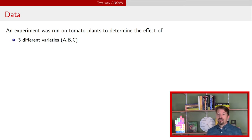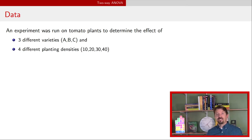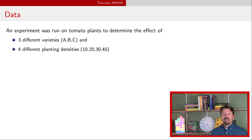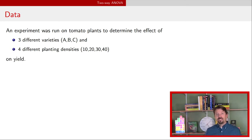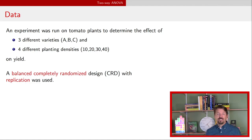So here's the idea. We have an experiment done on tomato plants. We have three different varieties — A, B, and C — and four different planting densities: 10, 20, 30, and 40. The experimental design that perhaps makes the most sense is a completely randomized design, or CRD.